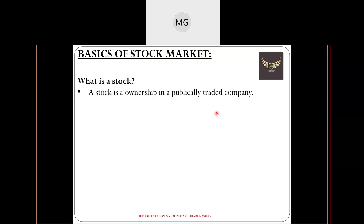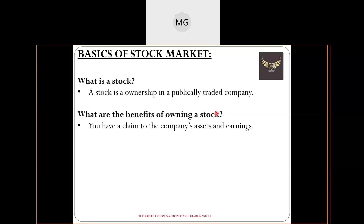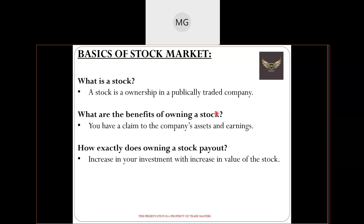How does owning a stock pay out? Suppose you buy stock ABC at 100 rupees per share and purchase five shares, so your total investment is 500 rupees. One year later the stock price rises to 150 rupees — your profit per share is 50 rupees, and if you cash out your total profit would be 250 rupees. That is the investment increase from the base value — one type of payout.